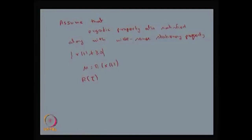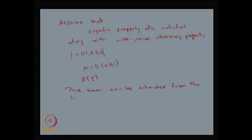Therefore, the mean is independent of t and the autocorrelation function is a function of τ only, and we have the ergodic property. Therefore, the mean can be estimated from the time average. The estimator for the mean, denoted μ̂(t), is equal to 1/(2T) times the integral from −T to T of x(t) dt. This is possible only if the ergodic property is satisfied.